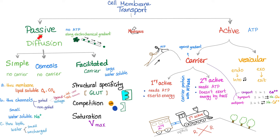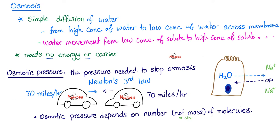Osmosis is passive diffusion of water — no energy needed, no carrier needed. It happens along the electrochemical gradient, from high concentration of water to low concentration of water, which means from low concentration of the solute, like sodium, to the high concentration of the solute. The definition of osmosis and osmotic pressure was discussed in detail in my physiology playlist.